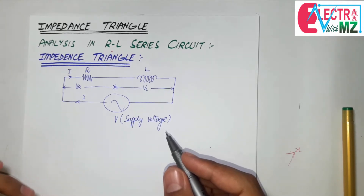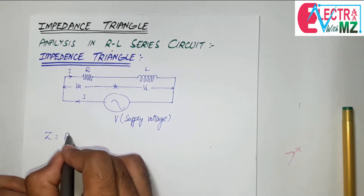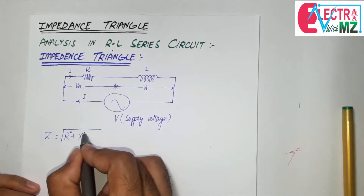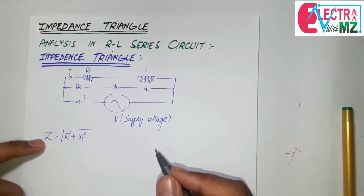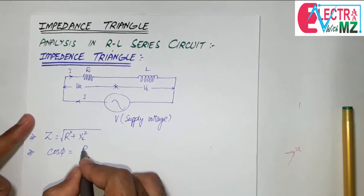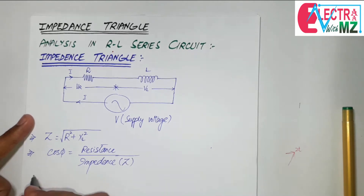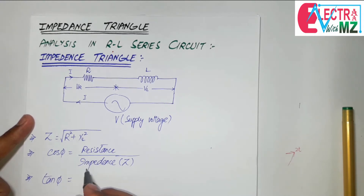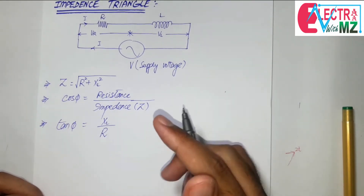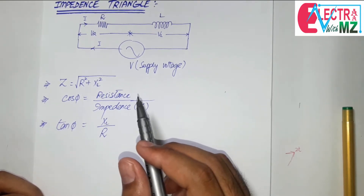In this circuit we study a term known as impedance, which is equal to Z = R + XL. When we find out its magnitude, it is equal to the square root of R squared plus XL squared. This term also comes into finding the power factor, cos phi, which is equal to resistance over impedance, and also in finding the phase angle phi, which is equal to tan inverse of XL over R. To find out impedance Z, we mostly use the concept known as the impedance triangle.